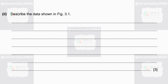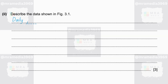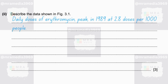Describe the data shown in Figure 3.1. Whenever you are asked to describe data from a graph — be it line, bar, histogram, whichever — the first and simplest observation you can make is when the graph peaks for the chosen variable. For daily doses of erythromycin per 1,000 people, these are the dark bars as given in the key. The highest dark bar is in 1989 at 2.8. Therefore, we can state that daily doses of erythromycin peak in 1989 at 2.8 doses per 1,000 people.